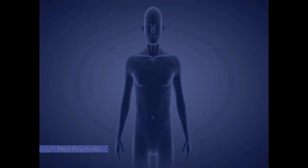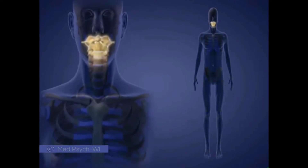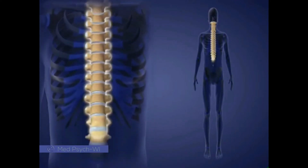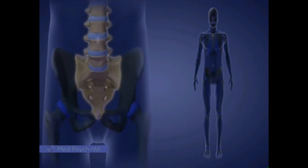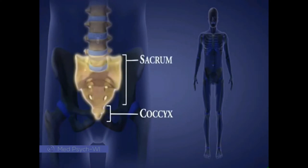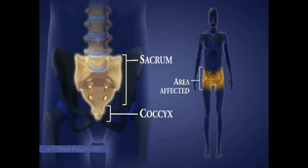The 33 vertebrae that make up the spine are separated into five groups. At the bottom of the spine, there are four coccygeal vertebrae. These bones are fused and make up the tailbone, otherwise known as the coccyx. Above these are five sacral vertebrae called S1 to S5. These are also fused. Nerves from this level supply the pelvic region.